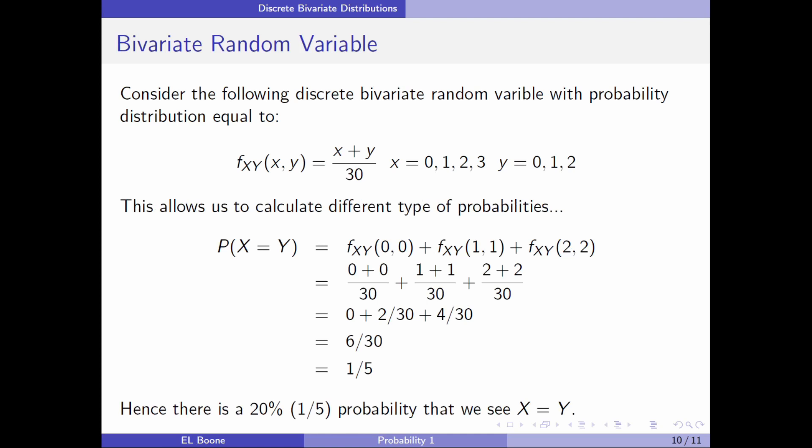Now that we have it as a proper probability distribution, we can calculate different types of probabilities. We could actually calculate the probability X equals Y. This would be the probability of f(0,0) plus f(1,1) plus f(2,2)—those are the ones where they could be equal to each other. You'd plug in (0 + 0)/30 plus (1 + 1)/30 plus (2 + 2)/30. You get zero for this piece, you get 2/30 plus 4/30, which is 6/30, which is one-fifth. So there's about a 20% chance or one-fifth probability that we see X equal to Y.